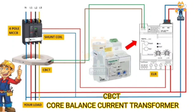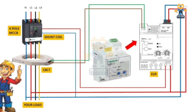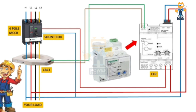In today's video we will see how to connect a core balance current transformer (CBCT) with an earth leakage relay (ELR). As you can see, we have an earth leakage relay, one core balance current transformer, one four-pole molded case circuit breaker, and a shunt coil.